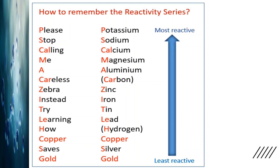tin, lead, hydrogen (also a non-metal), copper, silver and gold. A mnemonic to remember this: 'Please stop calling me a careless zebra instead try learning how copper saves gold.' This is one way found to remember the reactivity series. You can come up with your own ideas to memorize it.